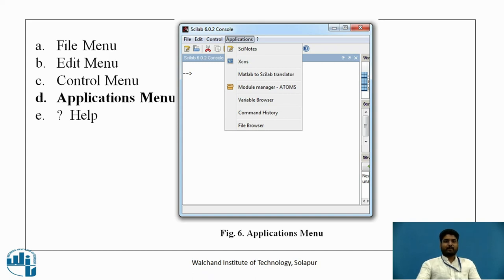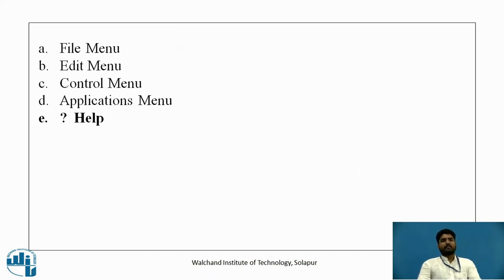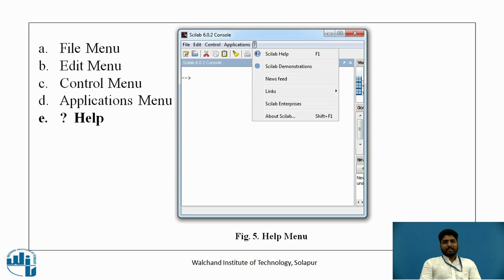We have various commands like a file browser, command history and variable browser and so on. Lastly, we have a help as question mark. If you need any shortcut or any doubt, you can just press F1 that is a shortcut for Scilab help. This is a small introduction on a file menu bar.